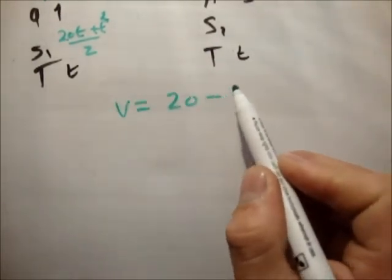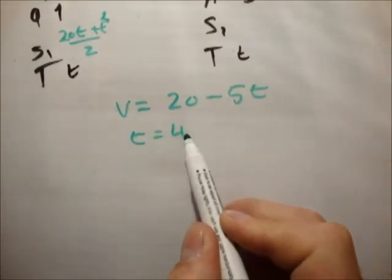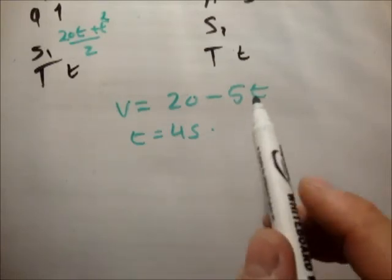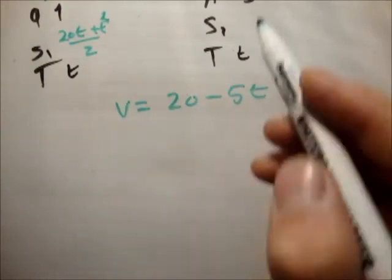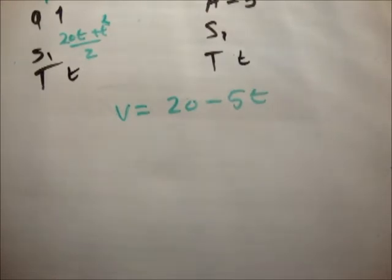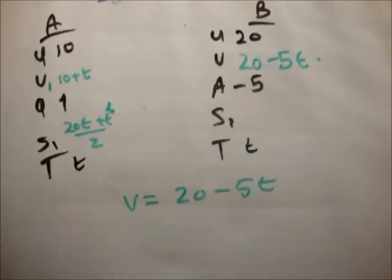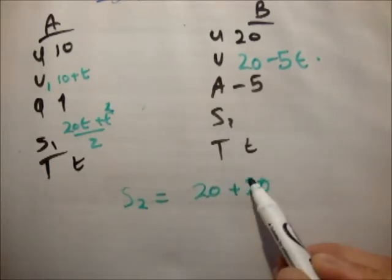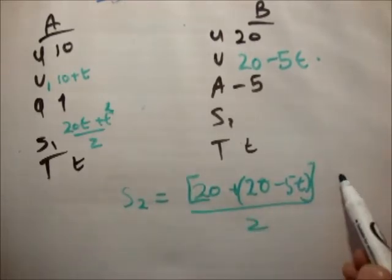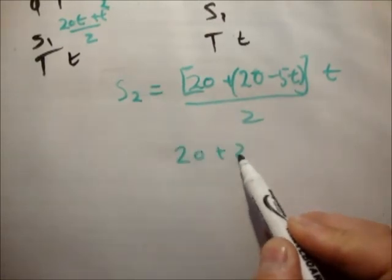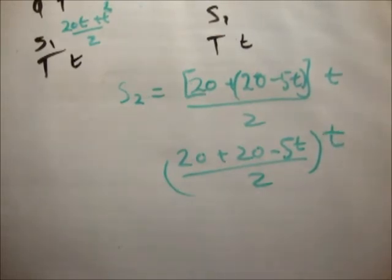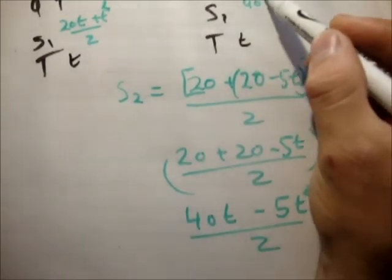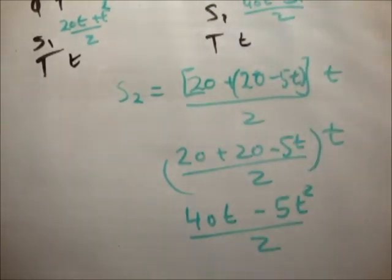Then use the same for car B. So V equals U plus AT, 20 minus 5T. So we'll do the distance. S2 equals U plus V over 2 times T. So that's 20 plus 20 minus 5T over 2 times T. So that's 40T minus 5T squared over 2. That's reasonably straightforward as well.